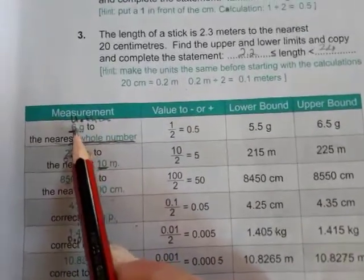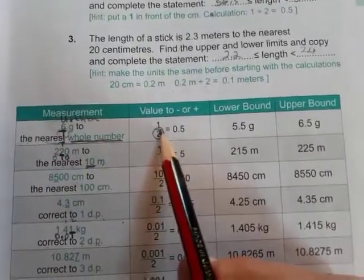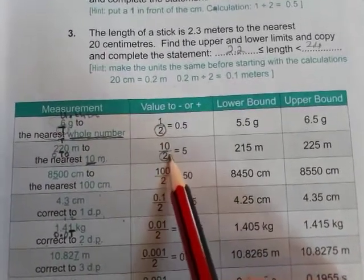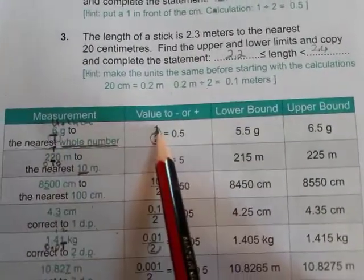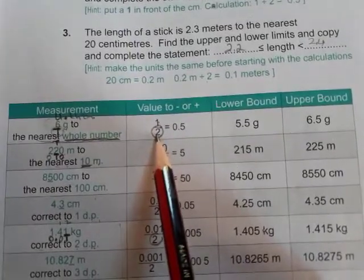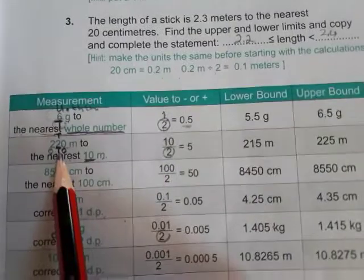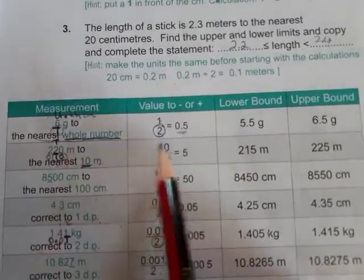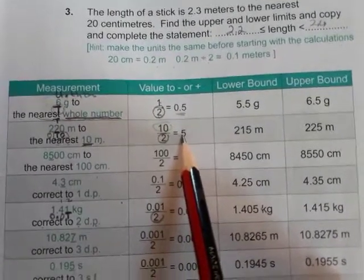Now, this is the one number that you will always divide by 2. Divide by 2. So take that 1. There's the 1. You divide that by 2, and that gives you an answer of 0.5. Here, you have 10. There's the 10. Divide that by 2, which gives you an answer of 5.